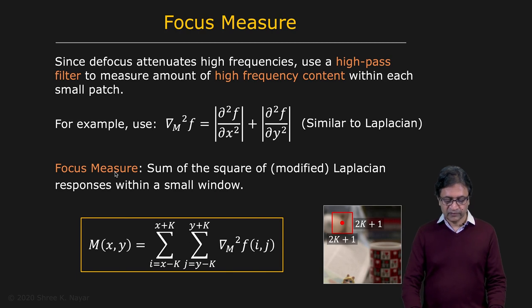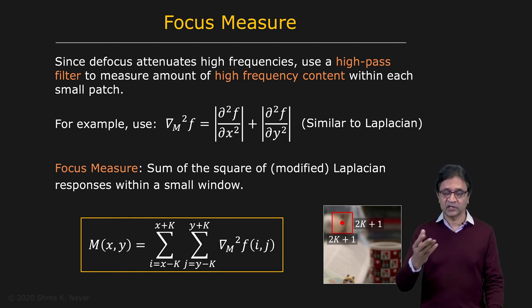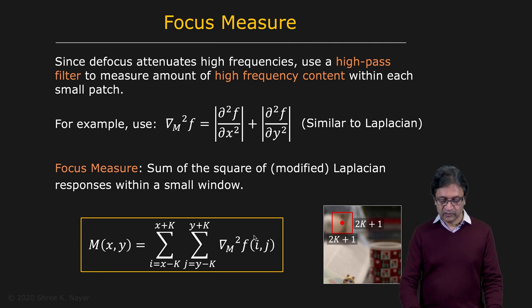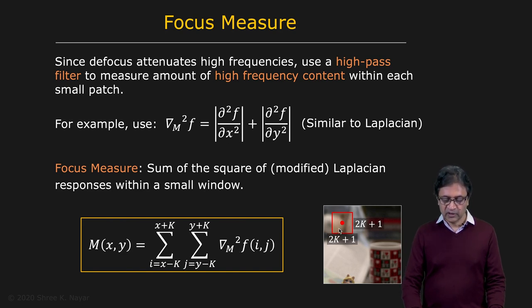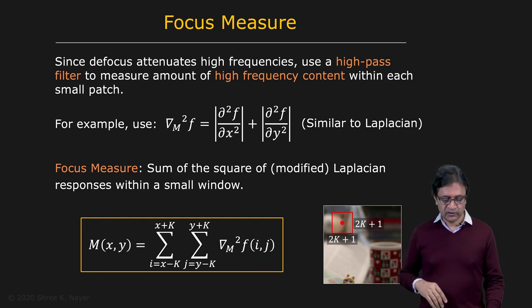We create a focus measure: take a pixel, place a window of size (2K+1) × (2K+1) around it, and for each pixel within this window compute the modified Laplacian — which can be computed with a window as small as 3×3. Sum the modified Laplacian values for all pixels in the window; that is the focus measure for point (X, Y). High focus measure indicates many high frequencies; lower values indicate less variation in the patch.